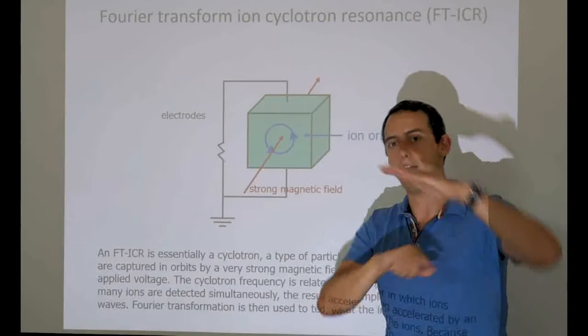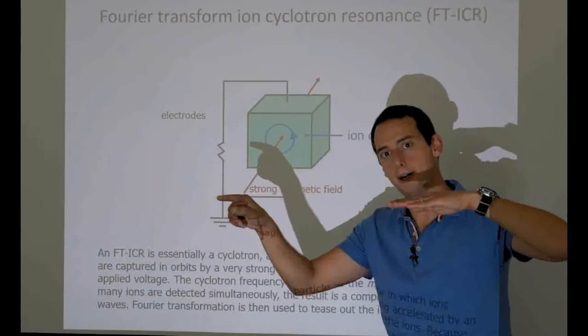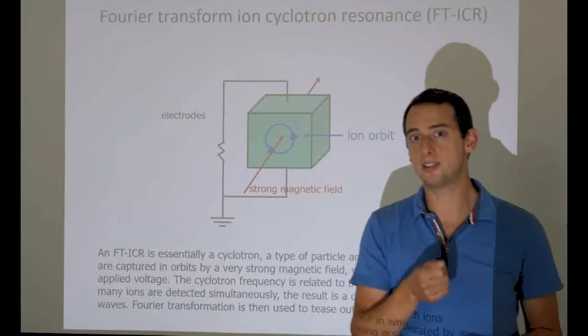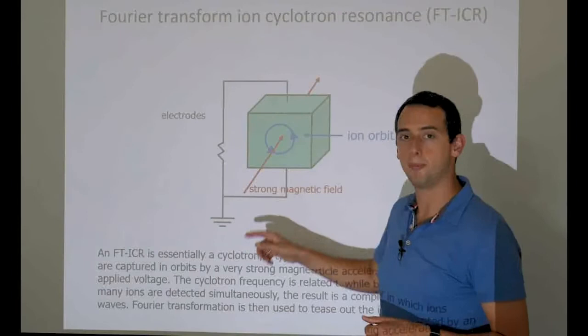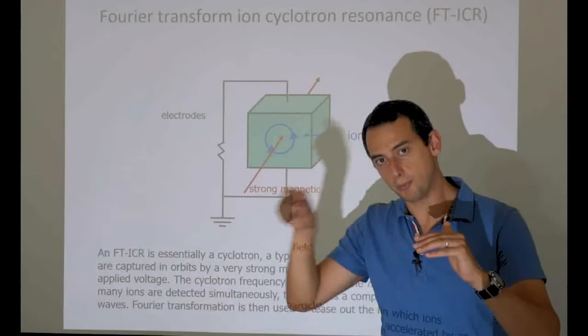Every time the ion passes, it gives off a little spike. If the ion goes really fast, there will be lots of spikes; if it goes slow, there will be fewer, more widely spaced spikes. So the speed with which the ion moves—which is related to the kinetic energy and the mass of the molecule—can be read out from the spike distance at the electrodes. The electrodes measure the time it takes for an ion to complete an orbit.